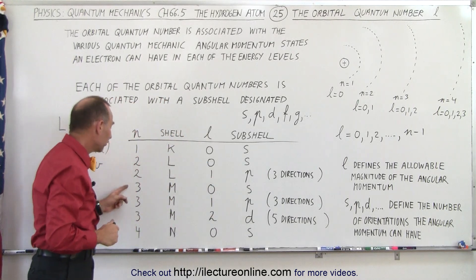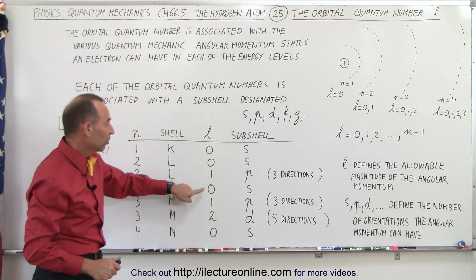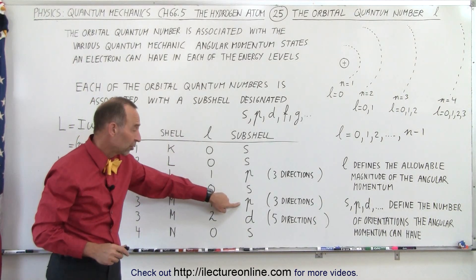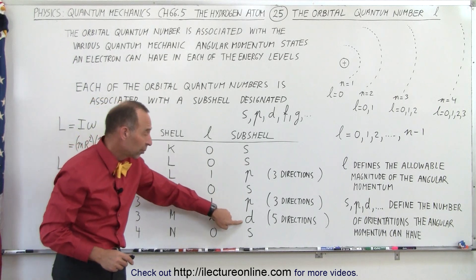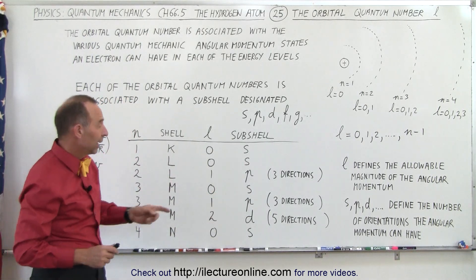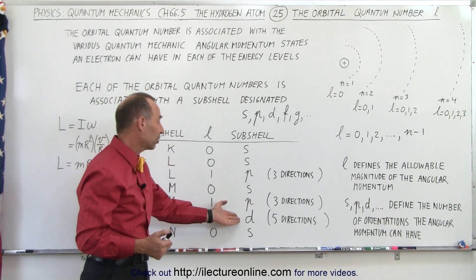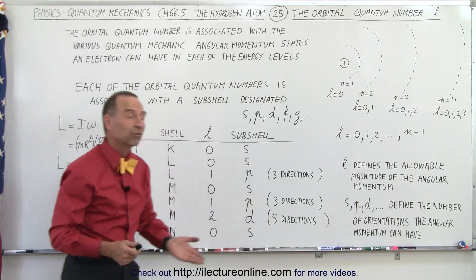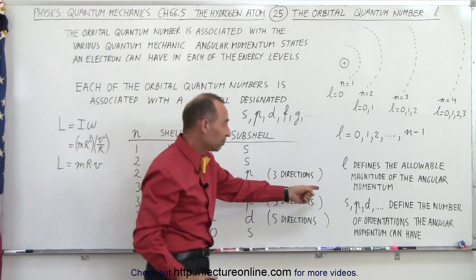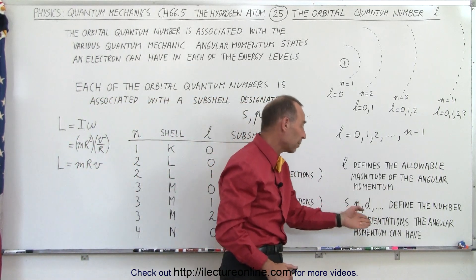For the third energy level — shell M — l can be 0, 1, or 2. When it's 0, it's associated with sub-shell s. When it's 1, it's associated with sub-shell p. When it's 2, it's associated with sub-shell d. In sub-shell p there are three possible directions for the angular momentum, and in sub-shell d there are five possible directions. So you can see that s, p, d — the sub-shells — define the number of orientations the angular momentum can have.